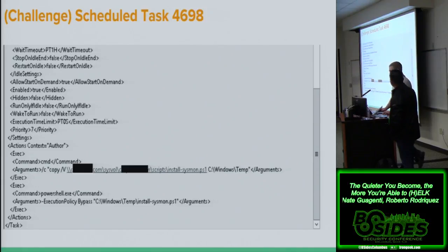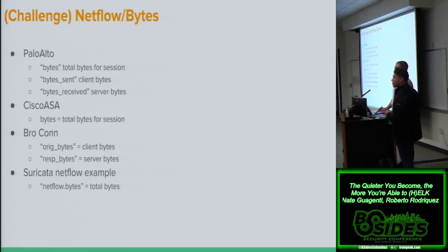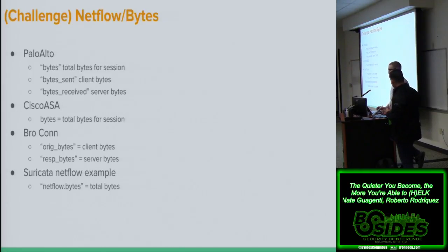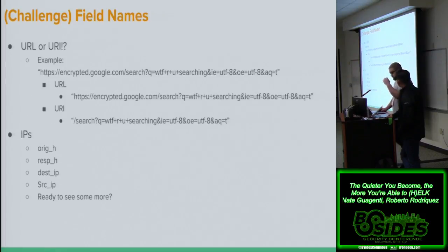PowerShell and scheduled task stuff is in HELK now — me and Roberto work on this in our spare time. Another one: NetFlow bytes. Who here has considered using a firewall as NetFlow? Palo Alto has it — it has network application layer detection, which is pretty good NetFlow usage. Why can't you sum all of these together? Is it a URL or a URI? IPs are just an absolute worst — I found over 18 different IP address field names just in Windows logs.